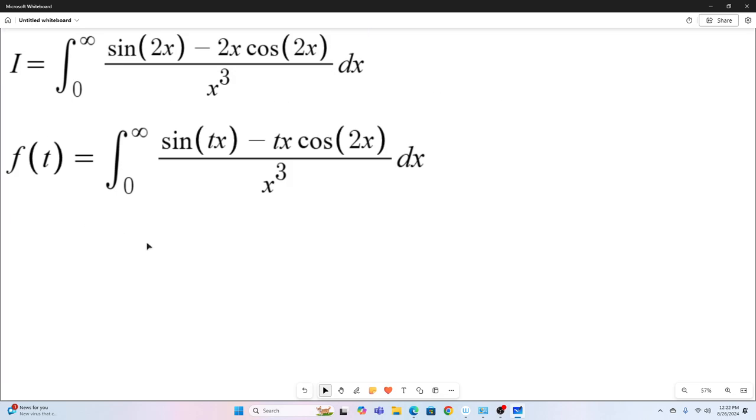So our F of T is this. You can see I just replaced this two and this two with a T. Next step, we differentiate under the integral sign using the Leibniz rule.